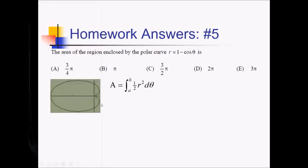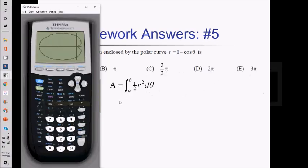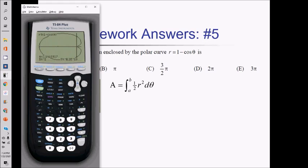I'm going to use the trace function to see where this thing begins and where it ends. I have a strong suspicion it's going from 0 to 2 pi to go all the way around once, but it never hurts to check. It looks like we are indeed starting at 0. As we arrow over, our angle is growing and we're going around. All the way over here we're at pi, and then if we keep going, that brings us back to 2 pi.